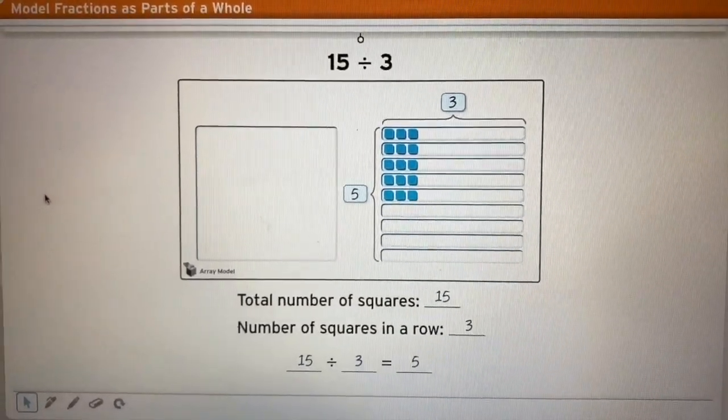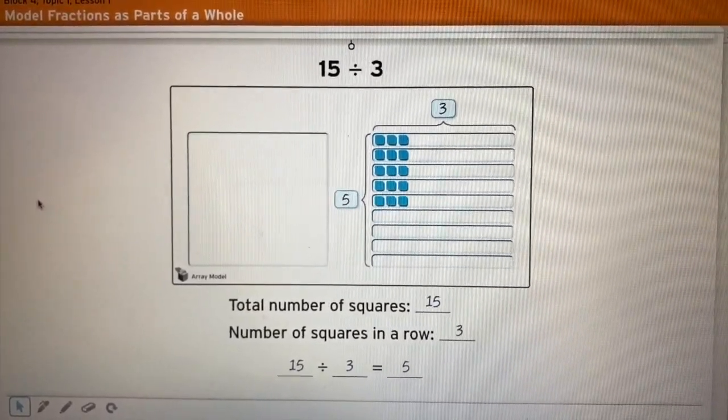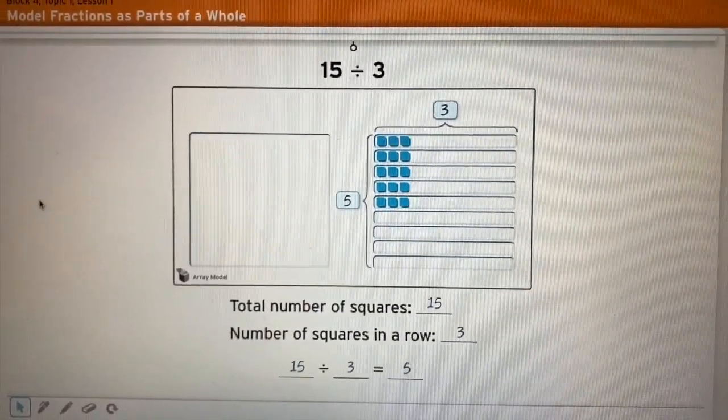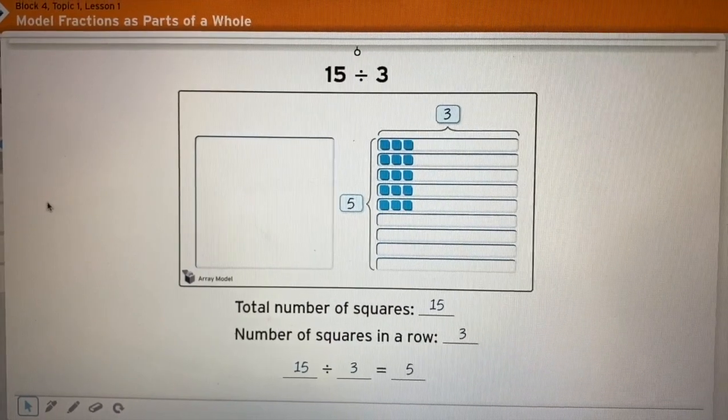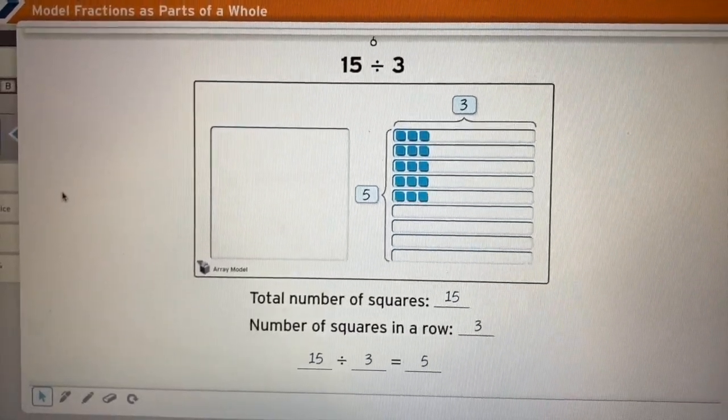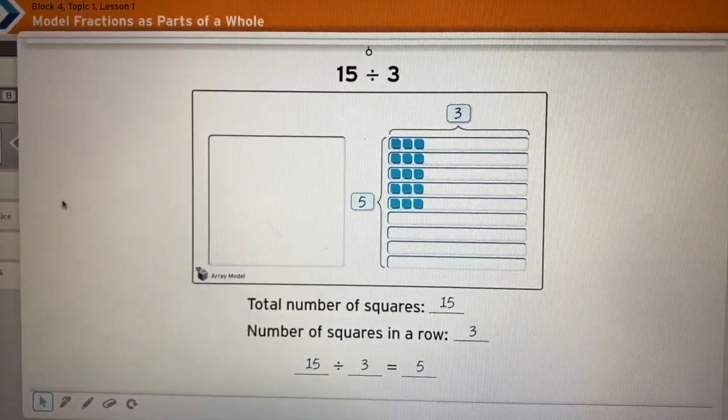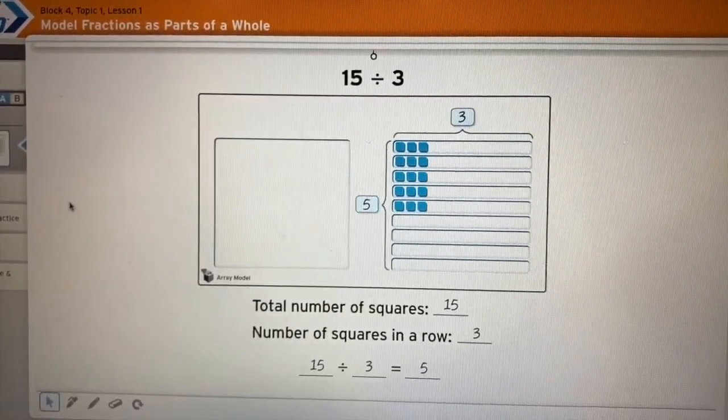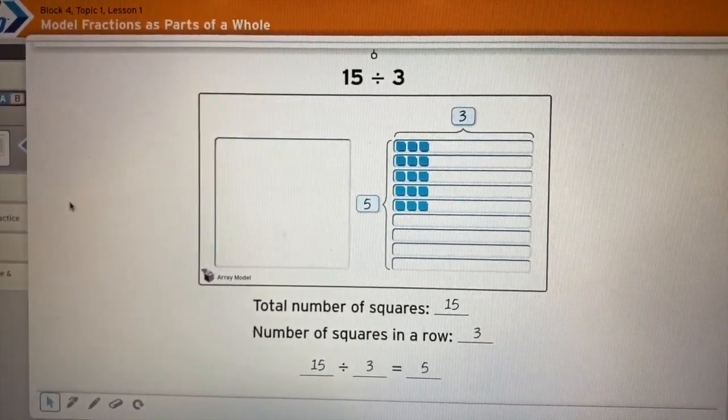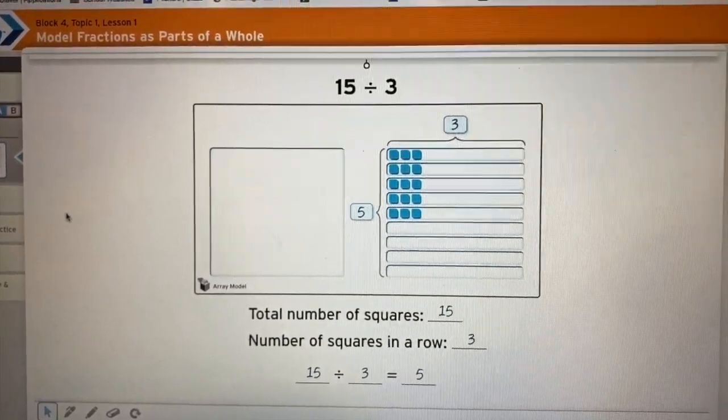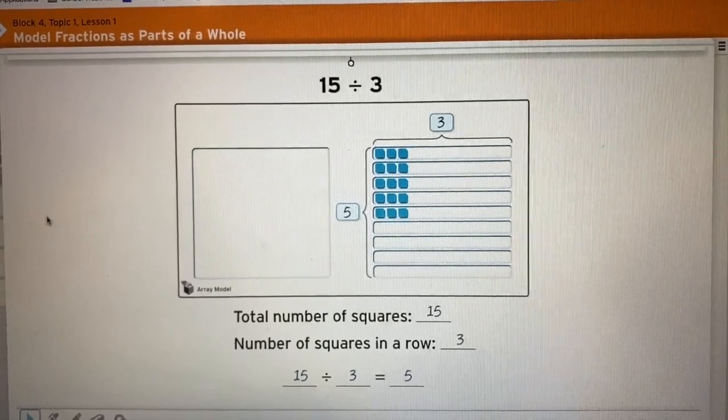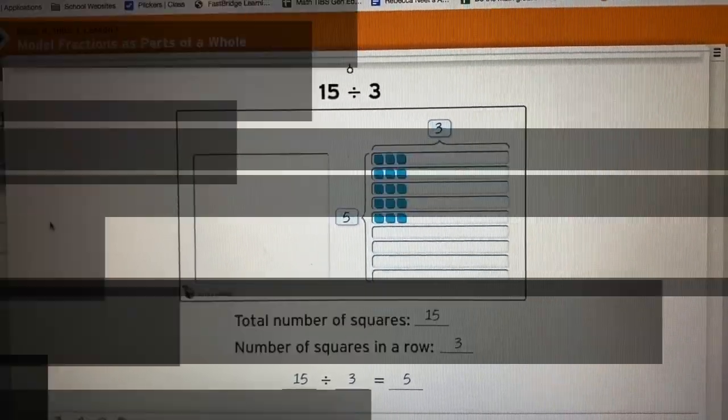If you guys remember during block three we spent a lot of time working on equal groups and how you can use multiplication to solve division problems. When you think about fractions you're also thinking about equal groups. If you took that array and made it a square and divided it into five equal parts you can see that three go into each of those five equal parts giving you a total of 15. So that idea of fractions of a group ties directly to what you already know about division.